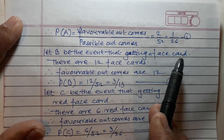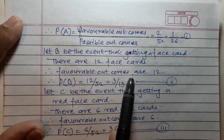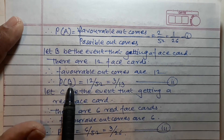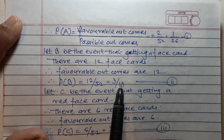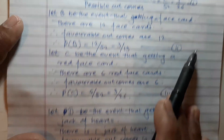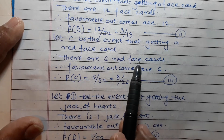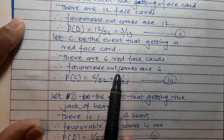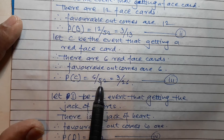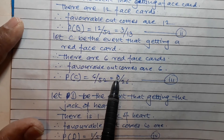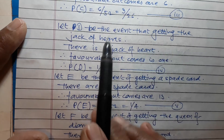Let P(B) be the event of getting a red face card. There are six red face cards, so favorable outcomes are six, and hence P(C) is equal to 6 upon 52, which is equal to 3 upon 26. Answer number three.